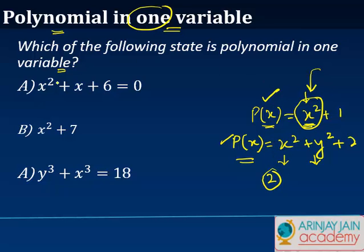What we need to find out is amongst these three scenarios which are given to us. Let's put this as c. We need to find out which of the following state is a polynomial in one variable.